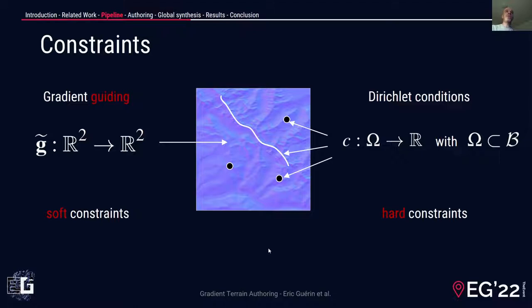Constraints are essential in our framework. There are two different types. Gradient constraints are set by prescribing the gradient field. Those constraints are not always satisfied by the reconstruction process and direct the generation of the elevation — we call them soft constraints. Direct conditions enforce the elevation at precise locations on the grid and are always respected — we call them hard constraints.